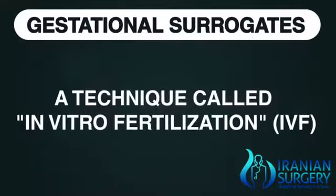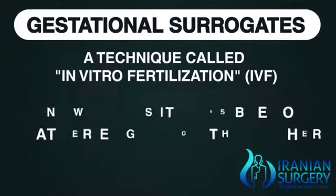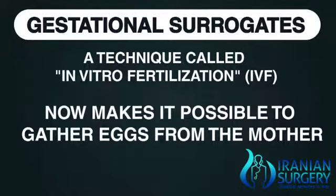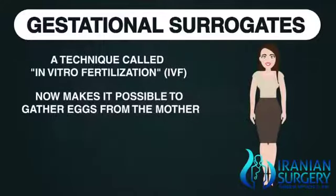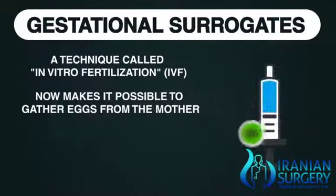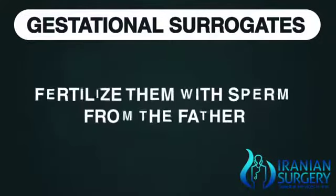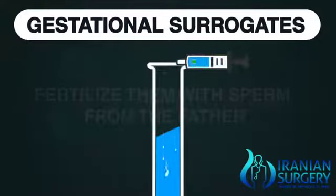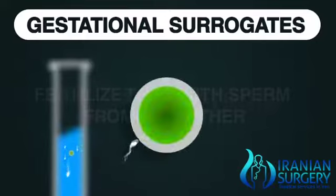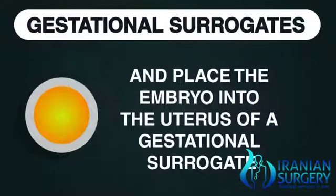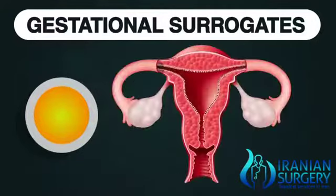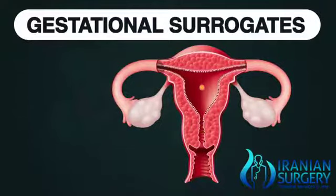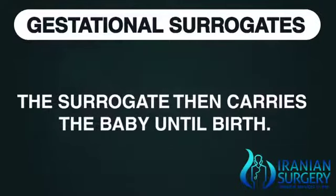A technique called in vitro fertilization, or IVF, now makes it possible to gather eggs from the mother, fertilize them with sperm from the father, and replace the embryo into the uterus of a gestational surrogate. The surrogate then carries the baby until birth.